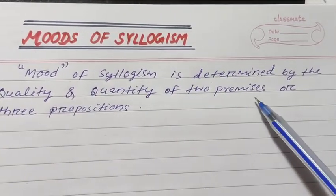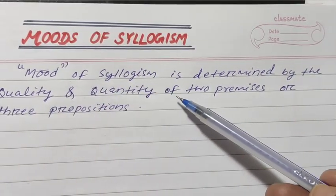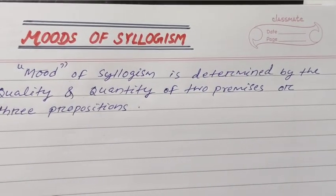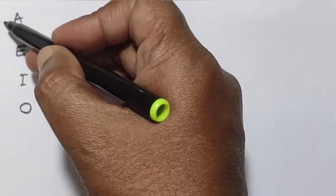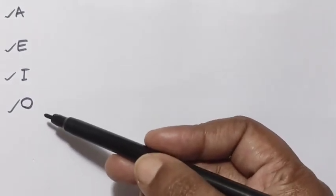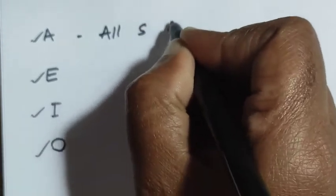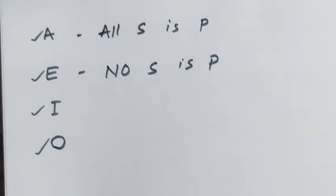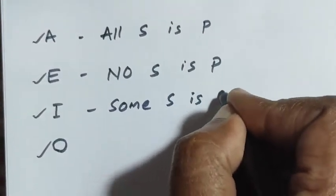Modes of syllogism is determined by the quality and quantity of the two premises, or three propositions. According to quality and quantity, propositions are classified into four types: A proposition, E proposition, I proposition, and O proposition. A proposition is universal affirmative, E proposition is universal negative, I proposition is particular affirmative. The structure of A is 'All S is P', and the structure of E proposition is 'No S is P', and the structure of I proposition is 'Some S is P'.